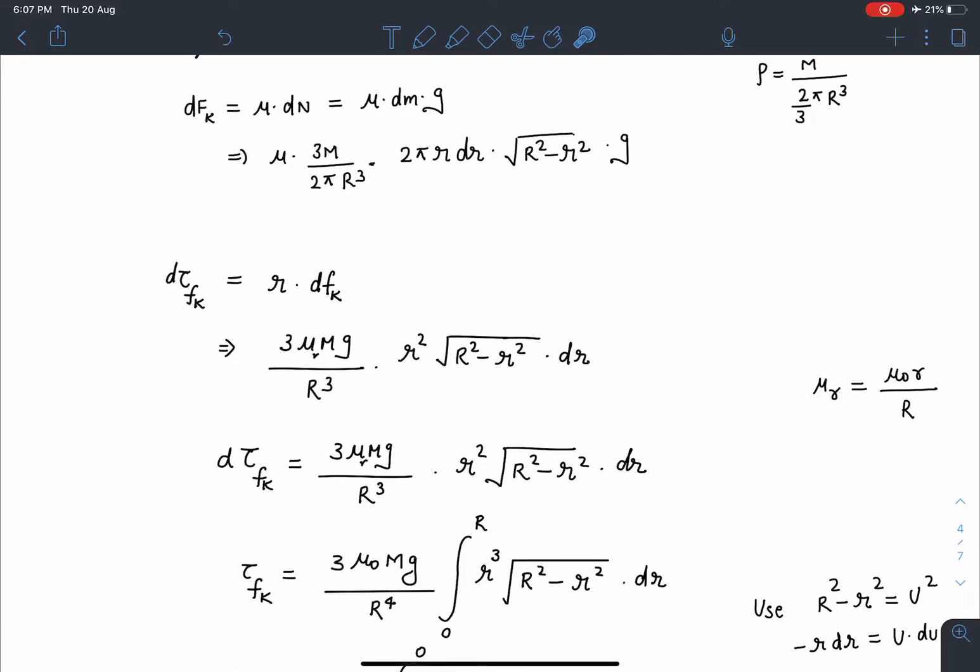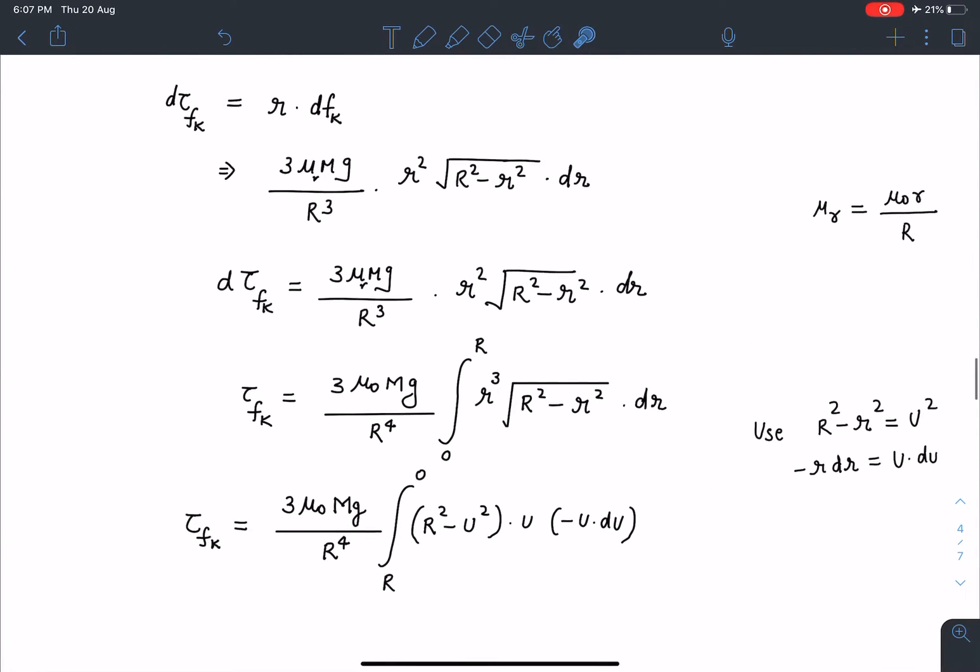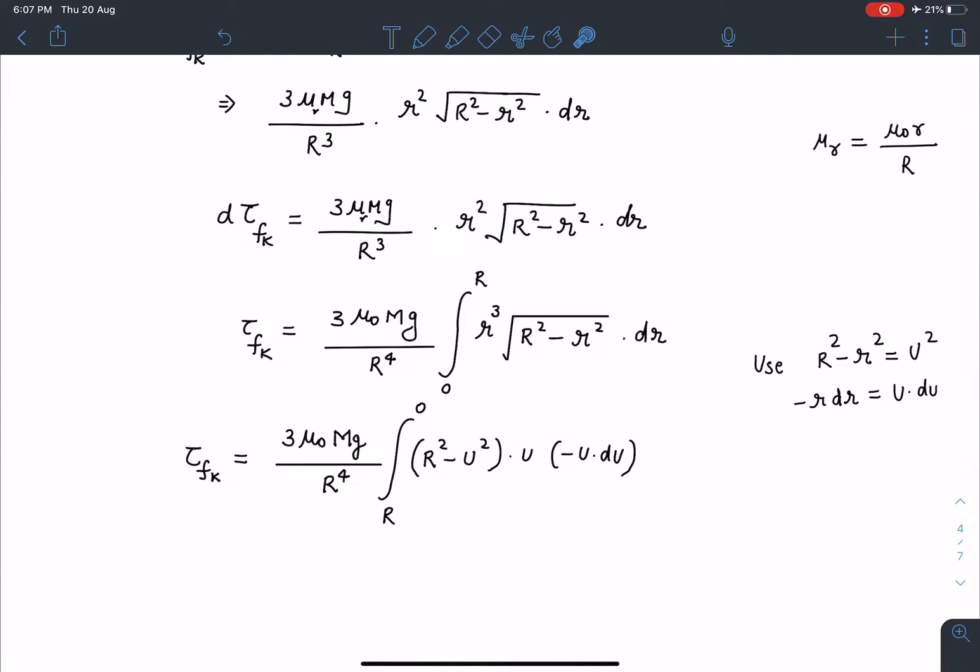So I'll be getting 3 mu r mg by R cubed times r squared root of capital R square minus small r square dr. Now I'm going to substitute this value of mu_r as mu naught small r by capital R. When I substitute that I'm going to get this relation here.